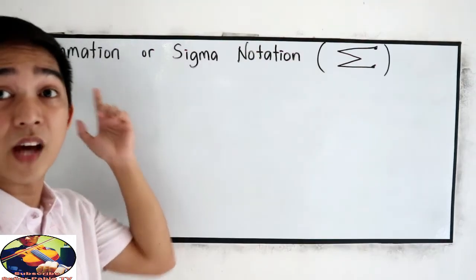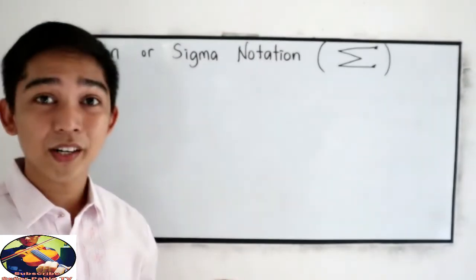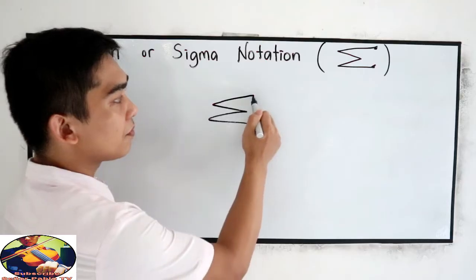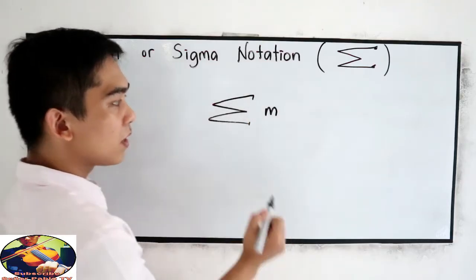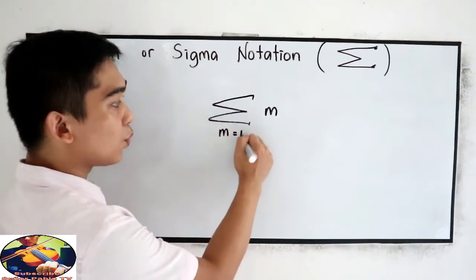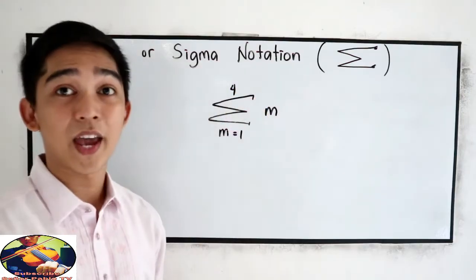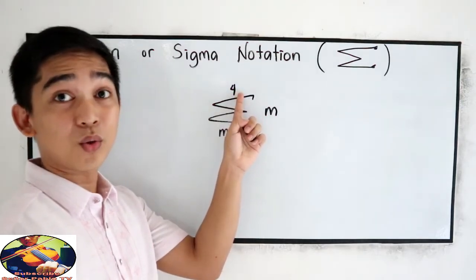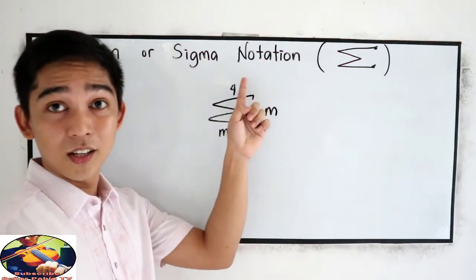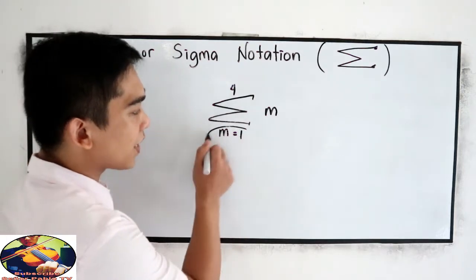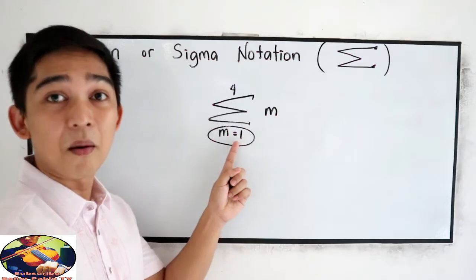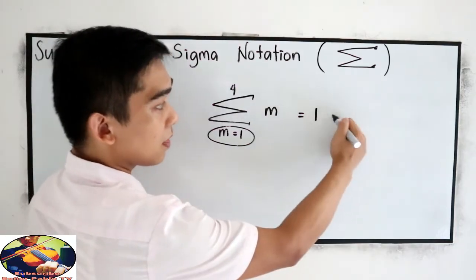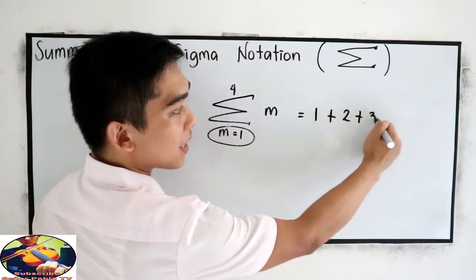The root word of summation is sum, so we are going to get the sum of our sequence. Let's say we have the summation of M from M equals 1 to 4. Summation of M goes from 1 to 4. So we are going to get the sum of 1 to 4. Take note that on this part will be our starting number, and this will be our ending number.